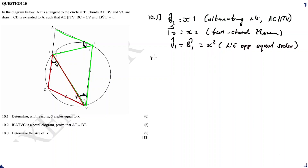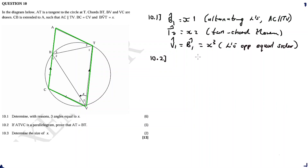Second question, 10.2: if ATV is a parallelogram, prove that AT is equal to BT.